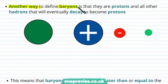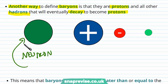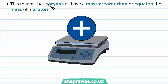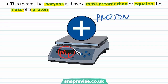Another way to define baryons is that they are protons and all other hadrons that will eventually decay to become protons. The proton is the most stable baryon because it has the lowest mass, so all other baryons decay to become a proton. For example, a neutron undergoes beta decay, producing a proton along with an electron and an anti-neutrino. This means that all baryons have a mass greater than or equal to the mass of a proton.